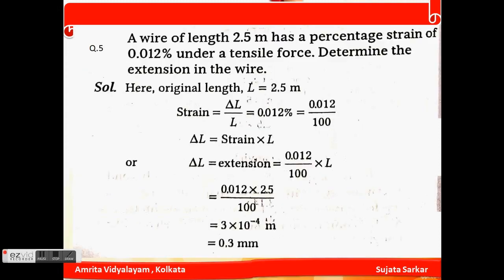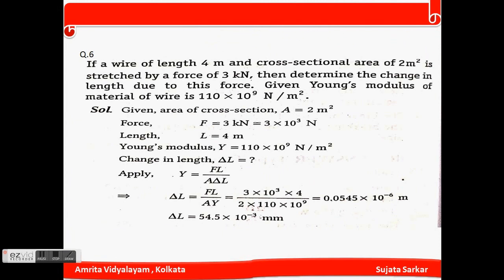Maximum load = maximum stress × area = 10⁸ × 3.14 × 2.25×10⁻⁴ = 7.1×10⁴ N. Question number 5: A wire of length 2.5 m has a percentage strain of 0.012% under a tensile force. Determine the extension in the wire. Strain = ΔL/L = 0.012/100. Therefore ΔL = 0.3 mm.